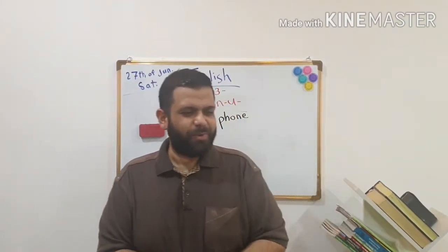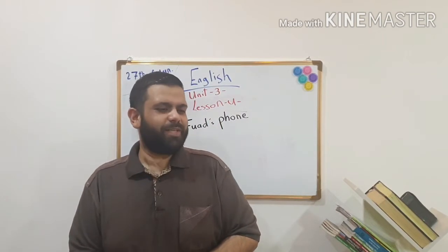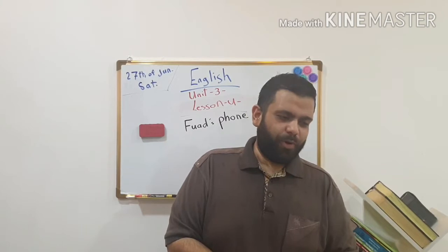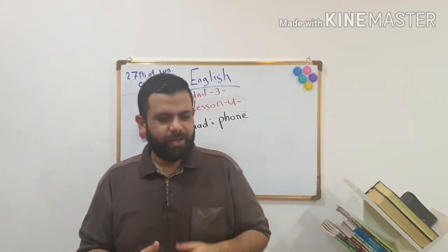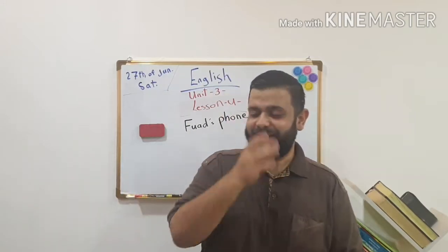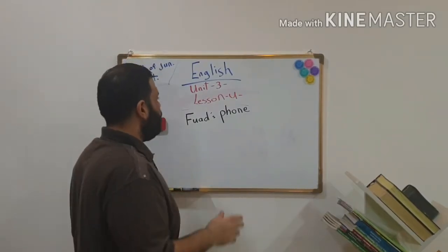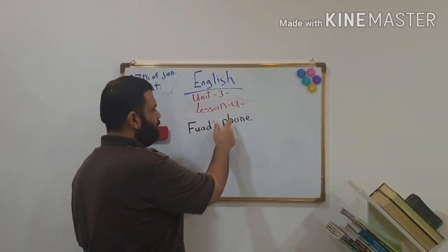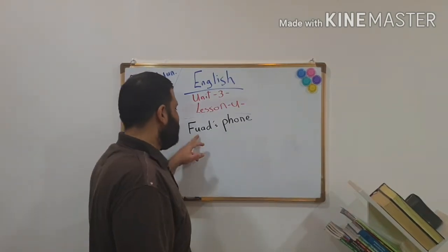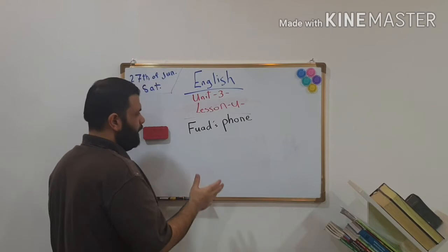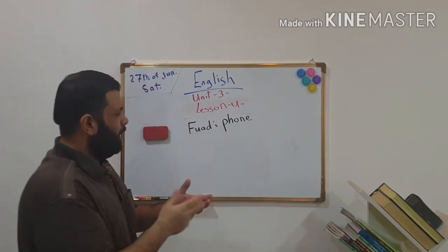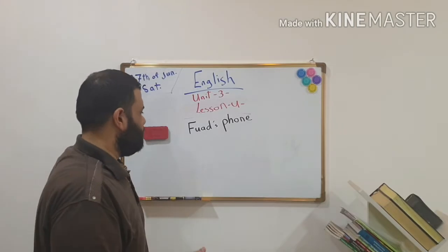That happened to you? Okay, and what happened? The screen has broken. Okay, great. And you bought a new one? Okay, great. Today we will talk about Unit 3, Lesson 4: Fuad's Phone. Fuad is the name of a person, and 'phone' is the phone we are using as you know.